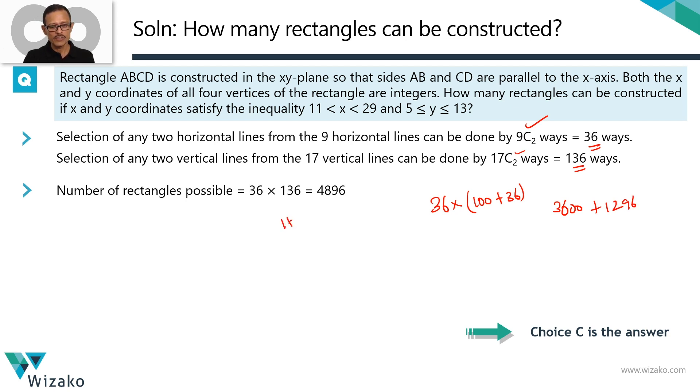I'm trying to impress upon one point. Up to 50, 1 to 50, please learn your squares and cubes. You cannot waste time trying to find out the value of 36 times 36. You should know 36 times 36 is 1296. So final answer is 4896. Choice C is the correct answer to the question.